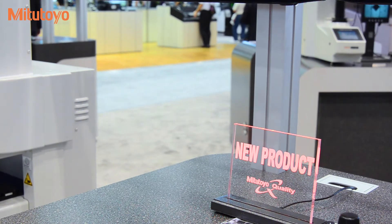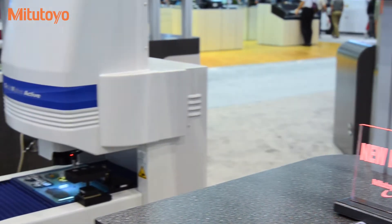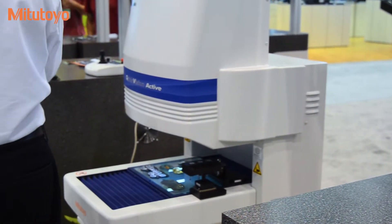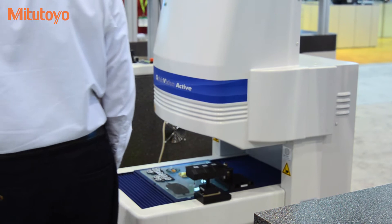The QuickVision Active CNC vision measuring systems are easy to operate with advanced functionality to meet many contact and non-contact measuring needs.